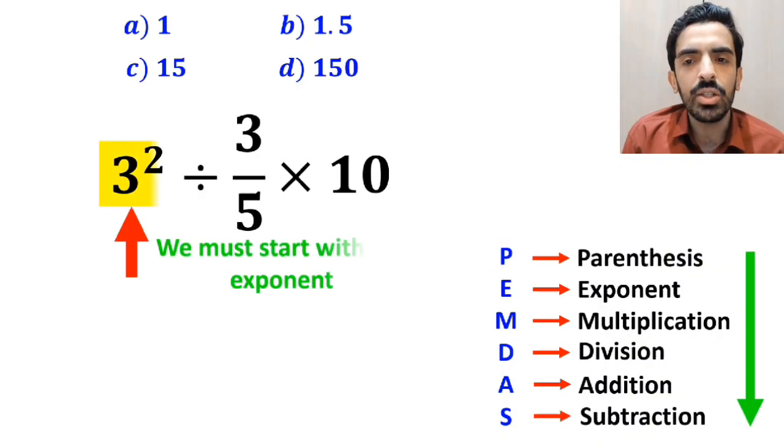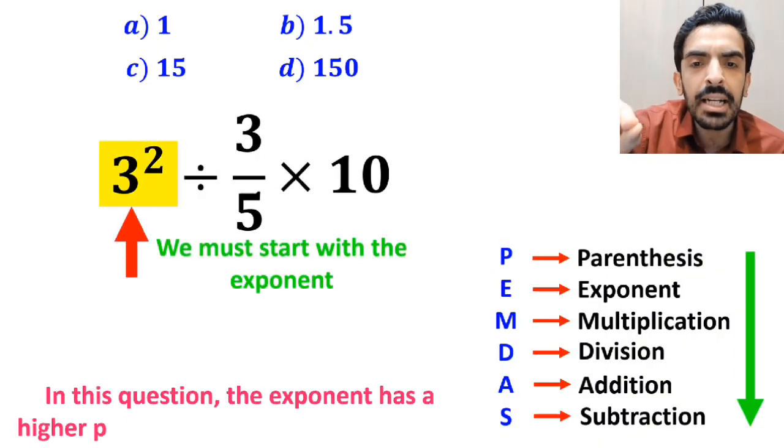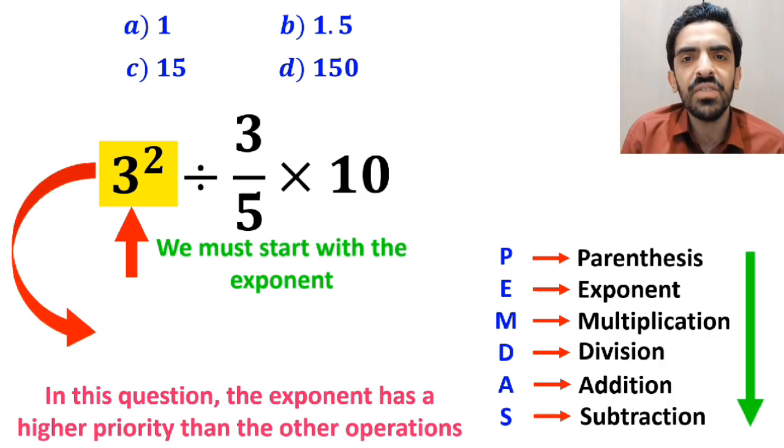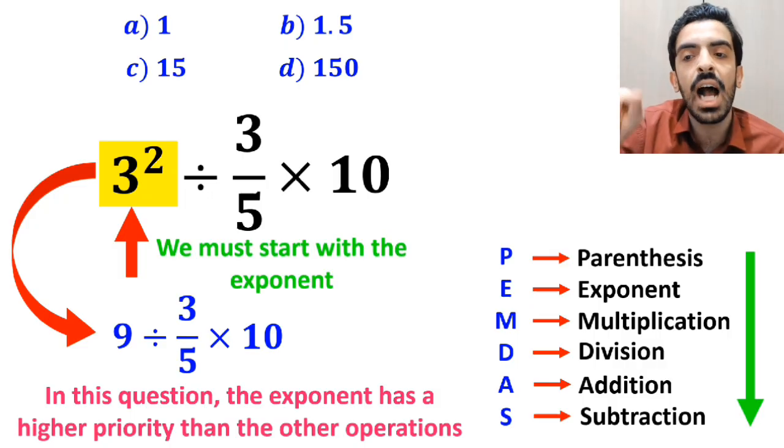Okay, first we should start with the exponent, because in this question, exponent has a higher priority than the other operations. So, instead of this expression, we can write 9 divided by 3 over 5 then times 10.